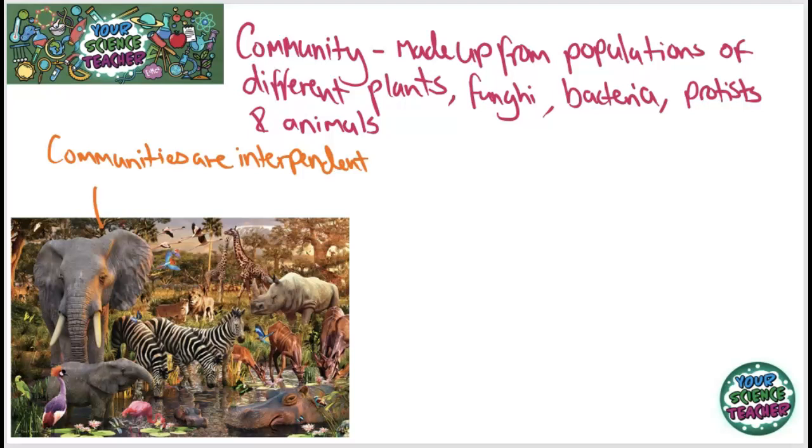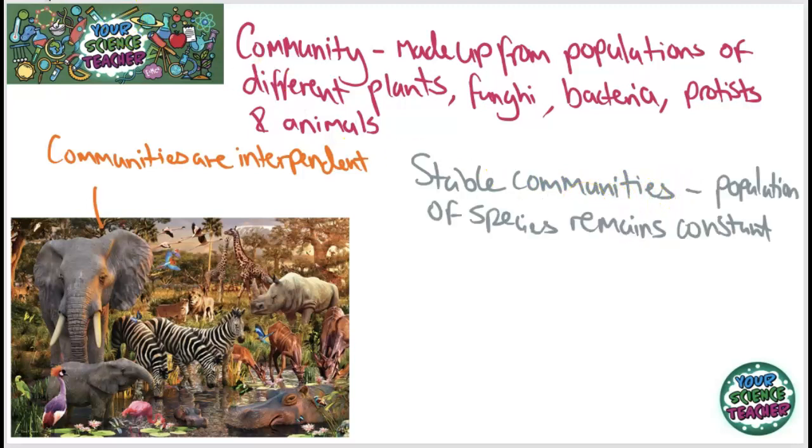Some communities can be defined as stable communities, and this is where the population of different species remains quite constant.